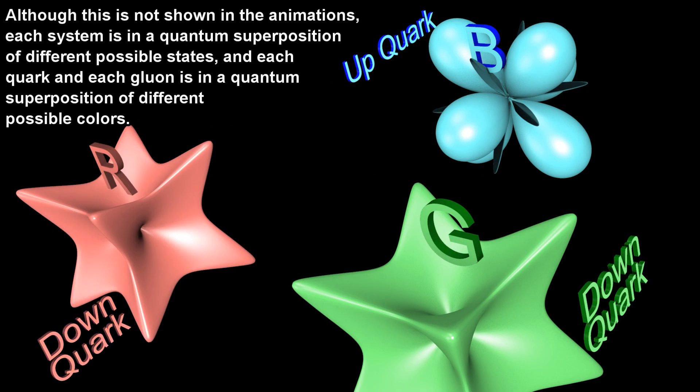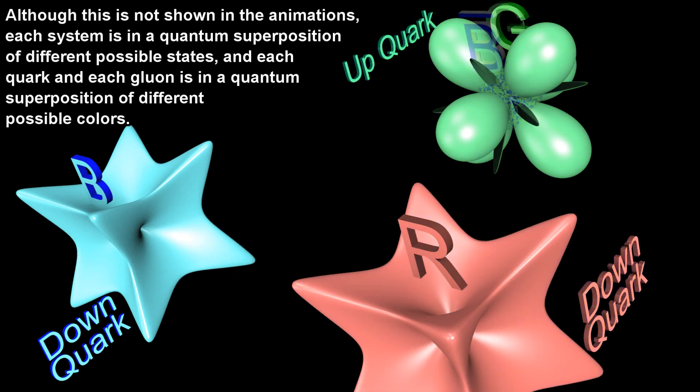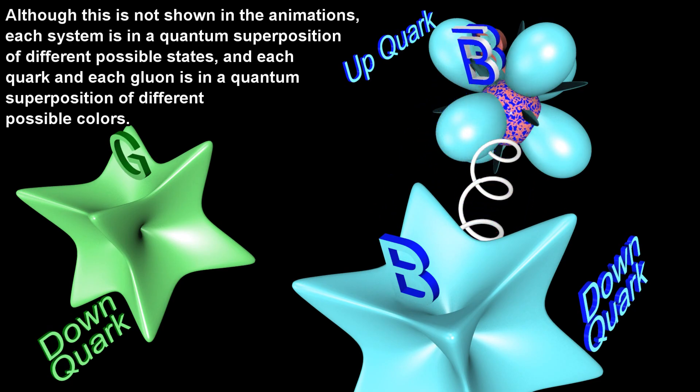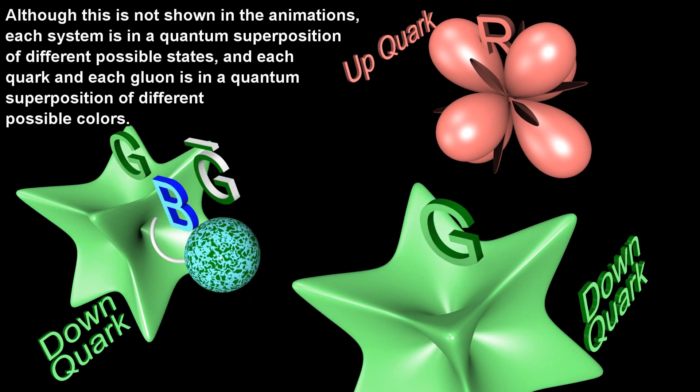Although this is not shown in the animations, each system is in a quantum superposition of different possible states, and each quark and each gluon is in a quantum superposition of different possible colors.